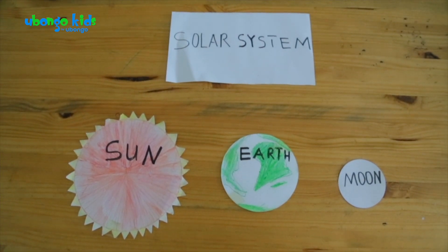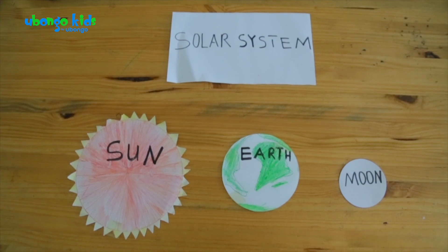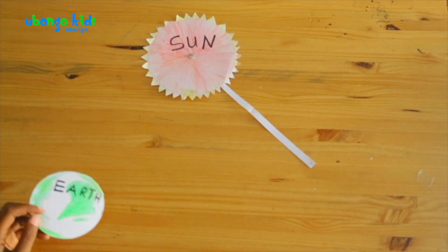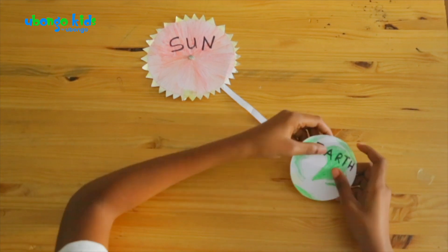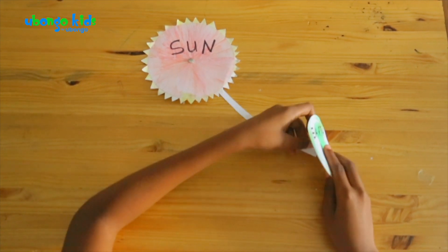The sun, the earth, and the moon. Stick a pin in the center of each circle. Then use two thin pieces of card to connect them.